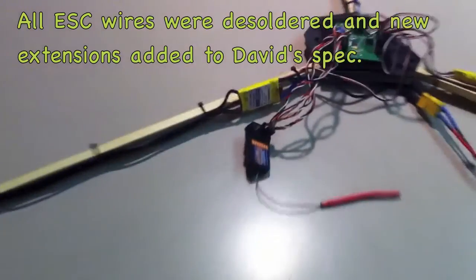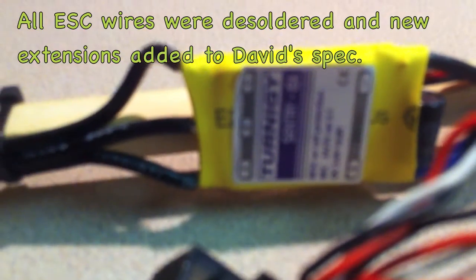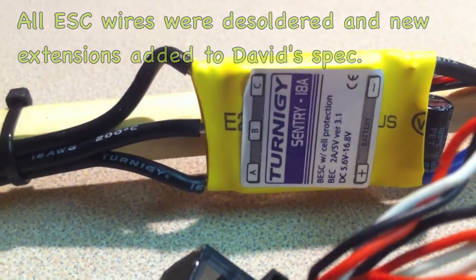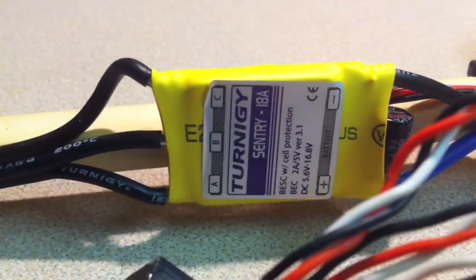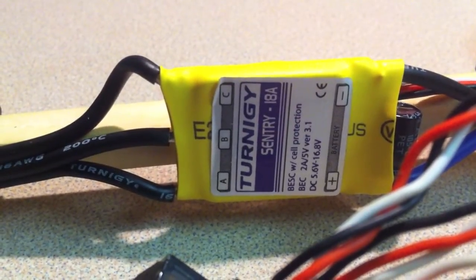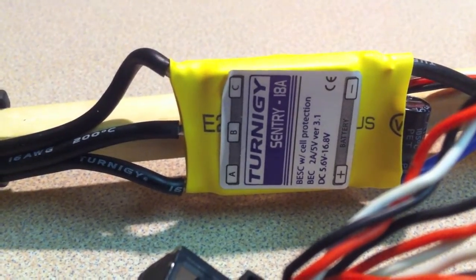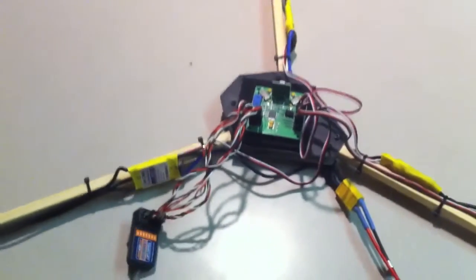I've got the Turnigy Century 18 amp ESCs, but I cut off the balancing plug and set them up for nickel metal hydride so they won't cut off. I still have to get a buzzer mechanism that will warn me of the low battery setting, and once I have that I think I'm 99% there.